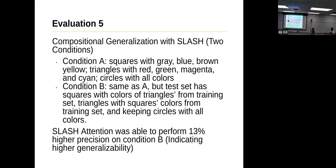So this is compositional generalization with SLASH when it has two conditions. So condition A has squares with gray, blue, brown, yellow, triangles with red, green, magenta, cyan, circles with all colors. Whereas condition B is the same as A, but the test set has squares with colors of the triangles from the training set, and triangles with square colors from the training set. And we keep the circles with all the colors.